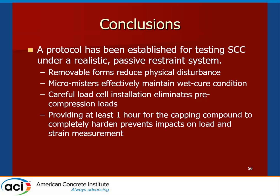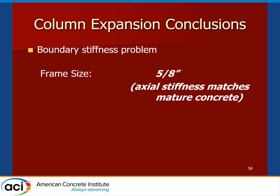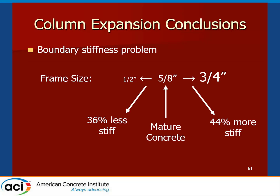A protocol has been established as a realistic passive restraint system for testing shrinkage comp. Removable forms reduce physical trauma to the specimens. Micromisters kept the columns saturated for wet curing. Careful load cell installation eliminates pre-compression loads, and providing time for the capping compound to harden prevents deleterious impacts on strain measurement. The middle frame restraint was 5/8-inch because that rod area matched the axial stiffness of mature concrete, while the 3/4-inch and 1/2-inch rods bracketed the problem — the half-inch being about 36% less stiff and the 3/4-inch being about 44% more stiff than mature concrete.